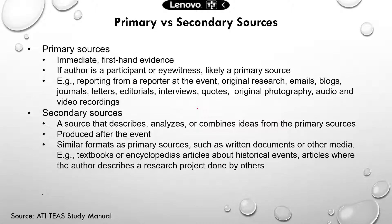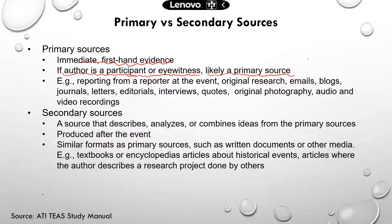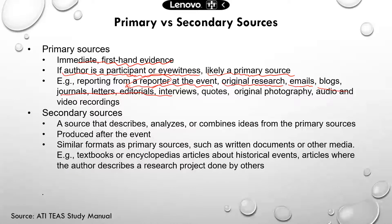The second goal is to give you a little training on how to locate information from a primary source. Let's quickly differentiate primary sources and secondary sources. Primary sources are immediate, first-hand evidence. The key to remember when identifying whether something is a primary source: if the author is a participant or eyewitness, the information is likely a primary source. So if the author is there during the event, the information is going to be a primary source.